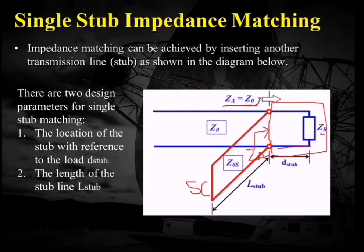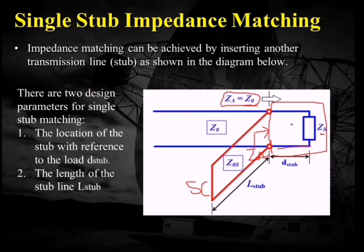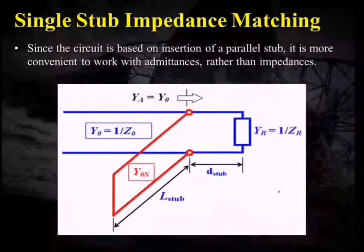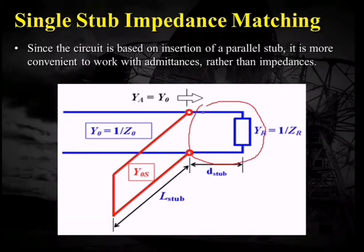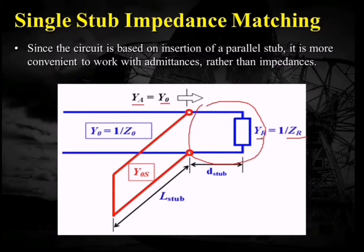My target is to make the value of Za equal to Z0. To achieve that, we have two design parameters. One is the distance — that is, at what point we should introduce this stub. This distance is calculated from the load and named here as D_stub. The second is the length of the stub, noted here as L_stub. Since we are calculating parallel impedances, it is easier to work in admittances. So I have renamed the characteristic impedance as Y0, ZA as YA, and ZR as YR.